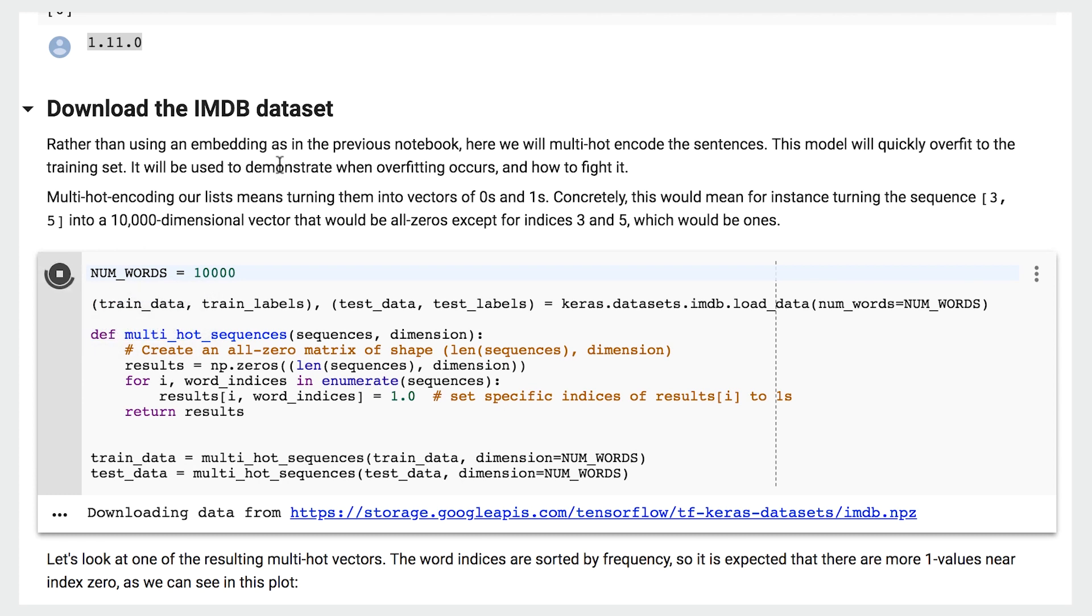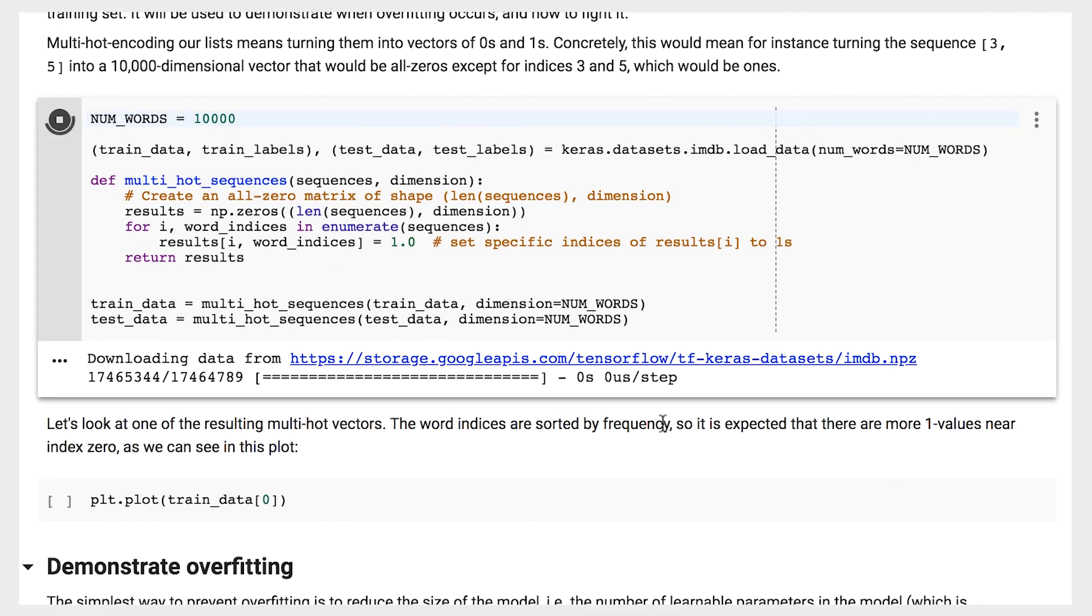For our model, we want the input to be a multi-hot encoded array, which is achieved by this code snippet. So what is this multi-hot encoded array anyway?